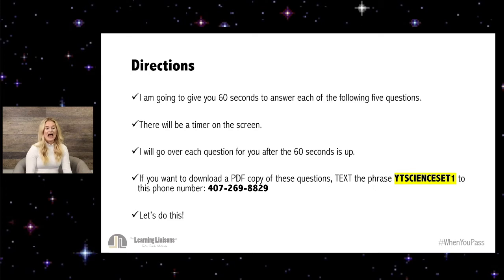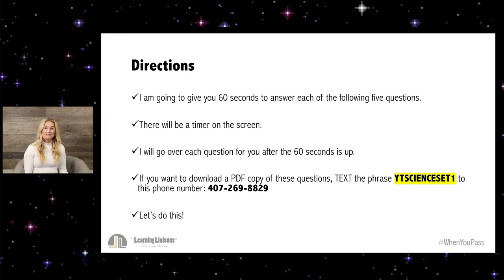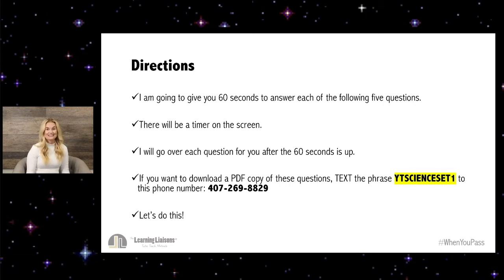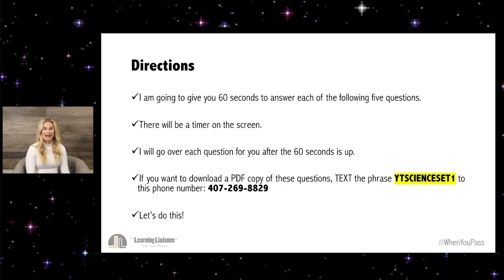I am going to give you 60 seconds to answer each of the following five questions. There will be a timer on the screen. I will go over each question with you after the 60 seconds is up. If you want to download a PDF copy of these questions, text the phrase YTSCINCESET1 to 407-269-8829. Let's do this.